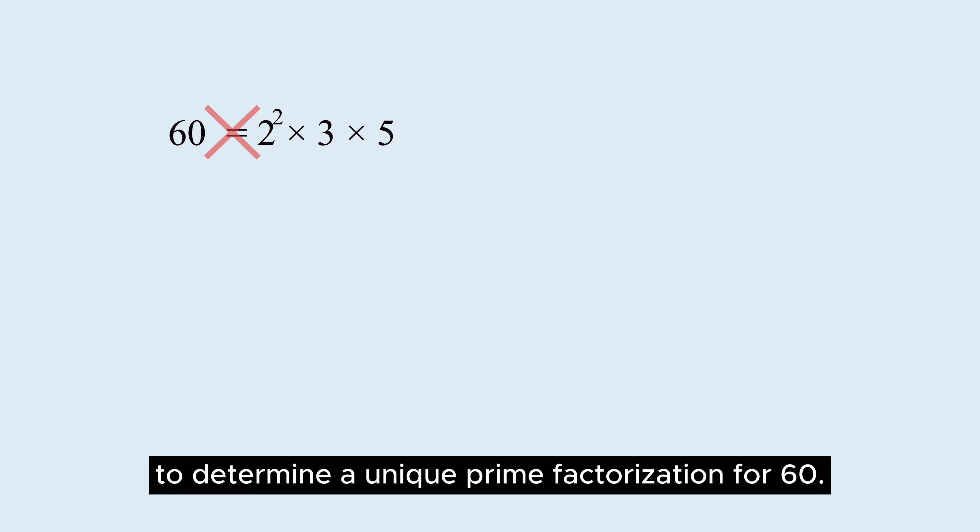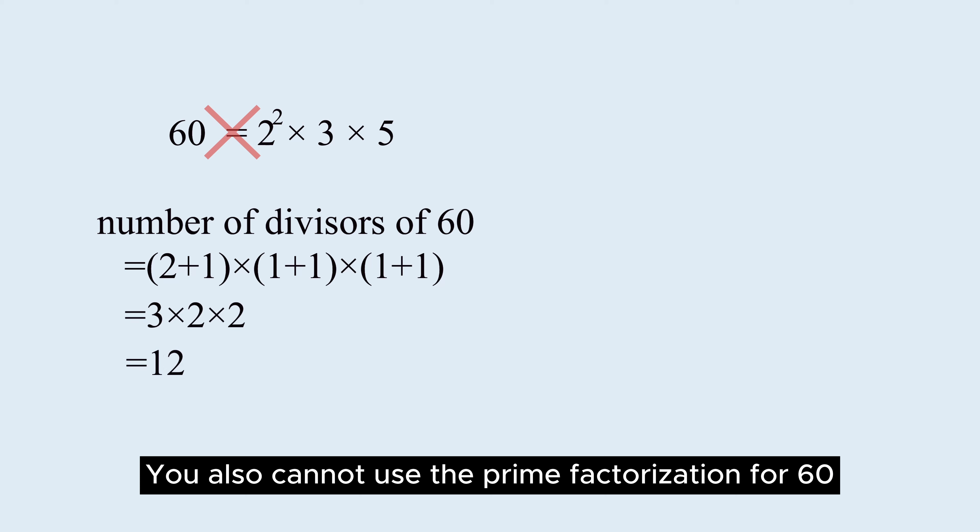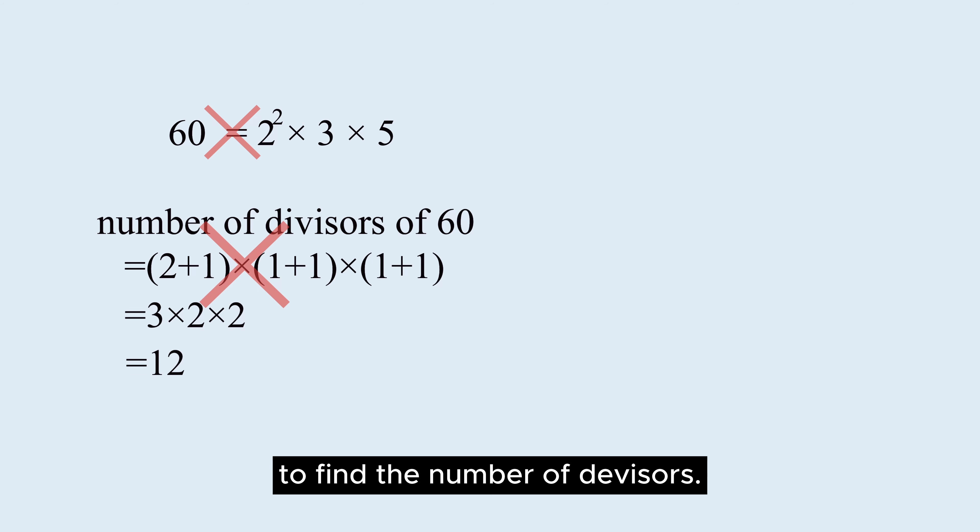It is not possible to determine a unique prime factorization for 60. You also cannot use the prime factorization for 60 to find the number of divisors.